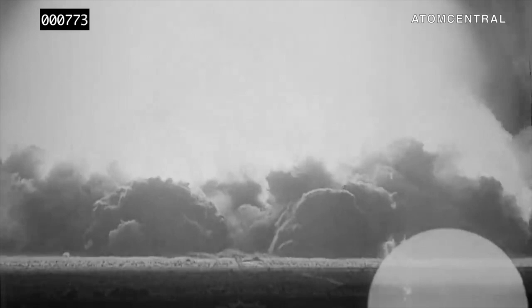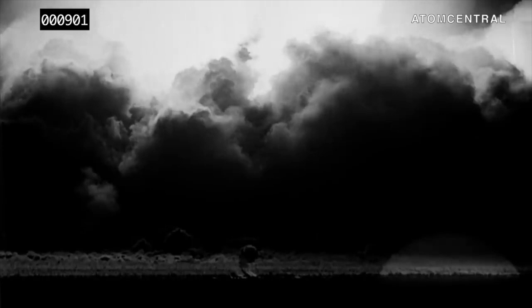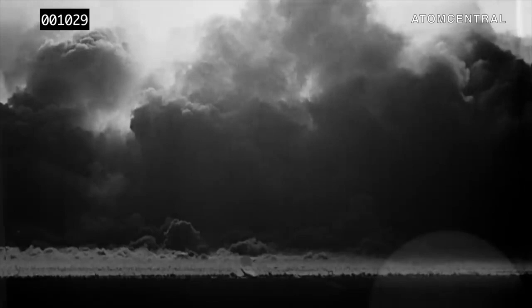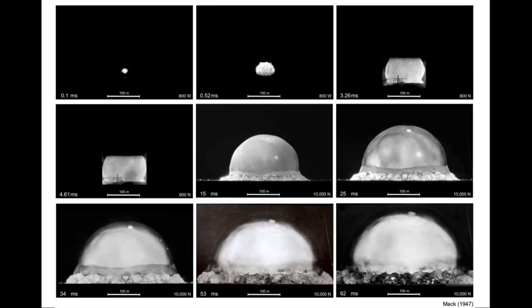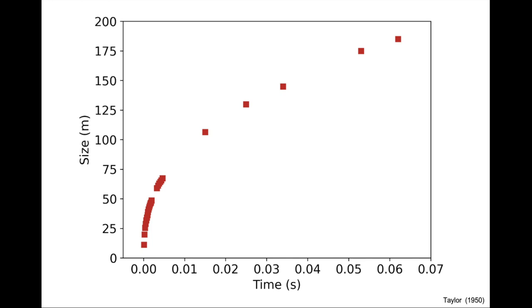If we restrict our attention to the dynamics of the blast, from 0.1 milliseconds to around 100 milliseconds, the radius of the explosion is rather well defined and can be tracked over time to produce a plot. The radius obviously does not extend linearly with time, which means the speed of the explosion front is not uniform — it gradually decreases over time.